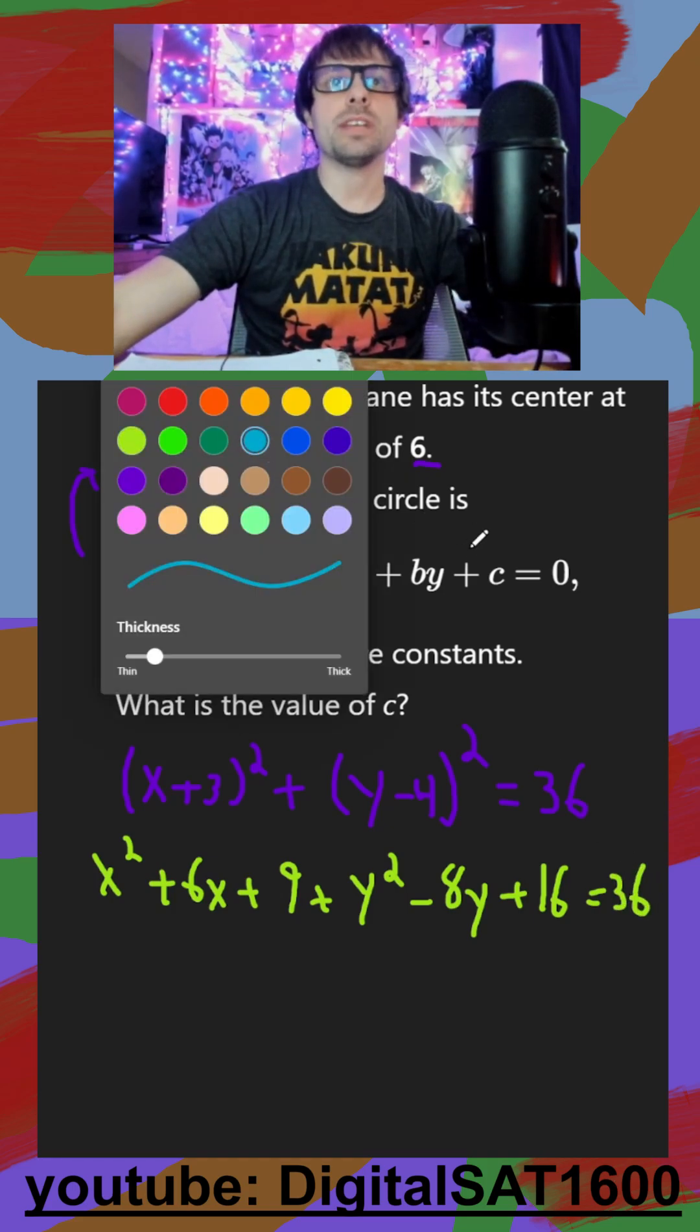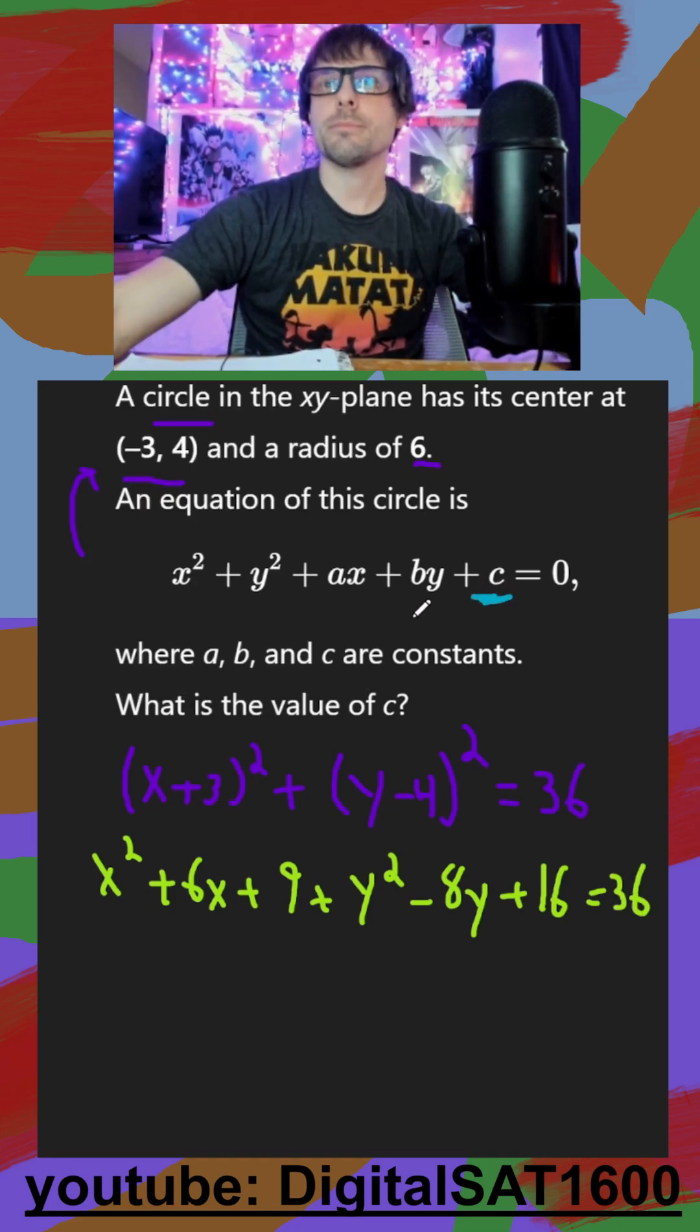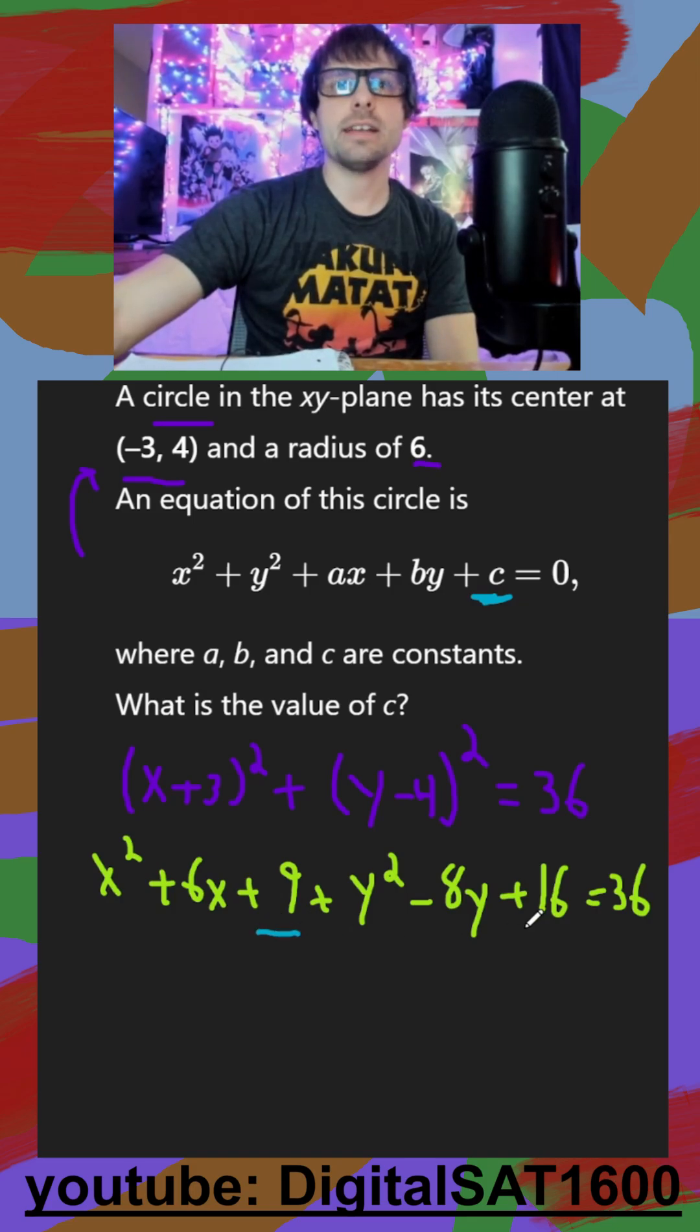And then what's nice is I only have to worry about my constant here. So I have a plus 9 and a plus 16 on this side, that's going to be plus 25. And they want me to equal 0 on the right side, so I subtract 36. And my final answer is going to be c is equal to negative 11.